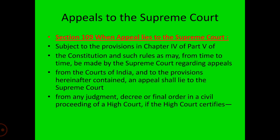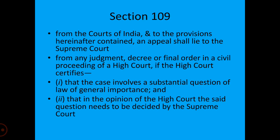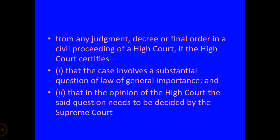Section 109 refers to Chapter 4 of Part 5 of the Constitution dealing with the Union Judiciary, which states that there shall be a Supreme Court of India consisting of a Chief Justice of India and, until Parliament prescribes a larger number, not more than seven other judges. The Supreme Court has the power to make rules from time to time regarding appeals from courts of India, and an appeal shall lie to the Supreme Court from any judgment, decree, or final order in civil proceedings of a High Court.